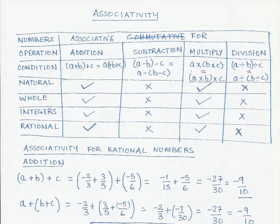In this video we will look at the associative property, or associativity, for rational numbers, while also reviewing associativity for the other numbers we have studied earlier. So let's get on to the associativity property. We have a table here, and let's take the condition given in the third column.